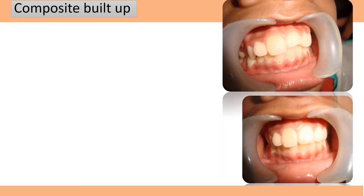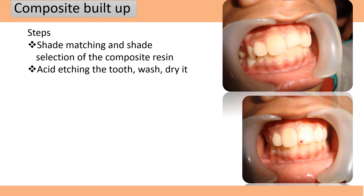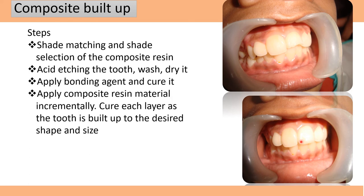Composite buildup is another option. You can see this case where the tooth is fractured and has to be built up with composite. Our first step is shade matching and shade selection, using shade guides. You select the desired shade and then acid etch the tooth surface, wash it and dry it. Then apply bonding agent and cure it. After that, apply composite material incrementally — each layer is applied and cured — and slowly the tooth is built up to the desired shape and size. The patient was pretty happy with it.